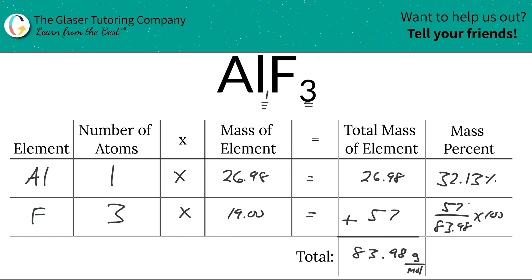And then multiply it by 100. That's a simple percent formula: part over whole times 100. Now when we plug that all into our handy dandy calculator, what we're going to find is a value of 67.87%, and that's the mass percent of fluorine.